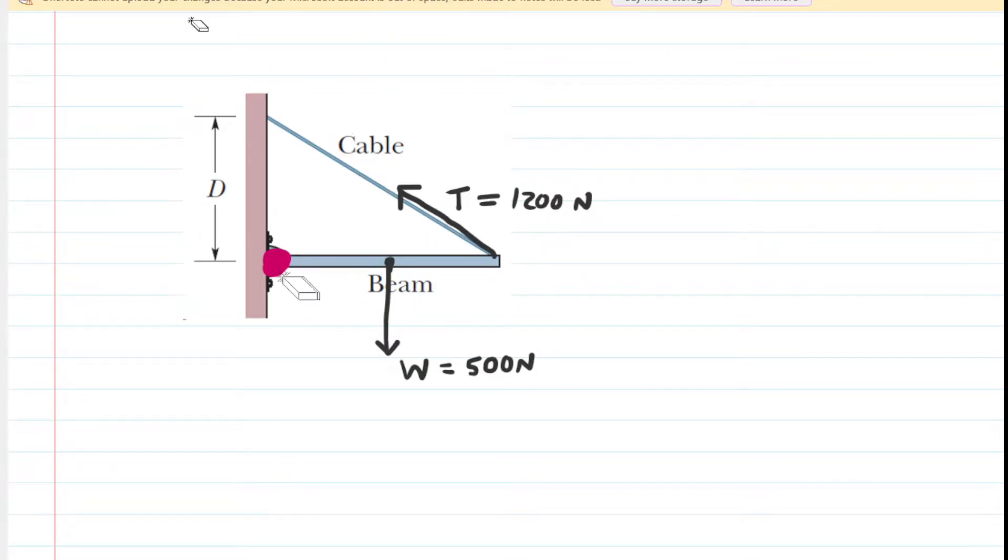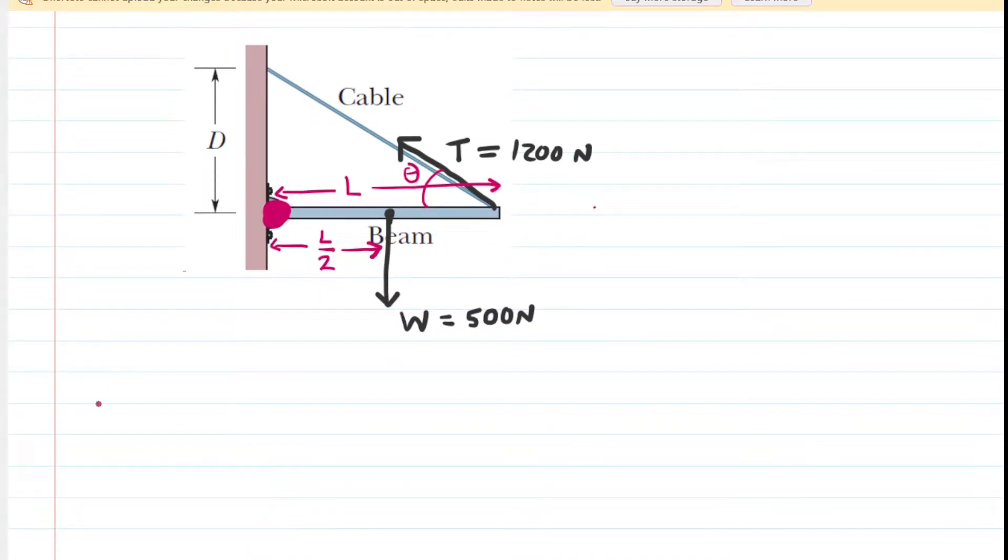Now we might want to label the length of the beam before we begin that torque analysis. And in addition, we will label the angle between the tension force and the beam. We're going to call that angle theta. Now we begin the torque analysis. And let us recall that torque is equal to the following equation: we're going to have R times the force times the sine of an angle.